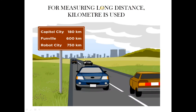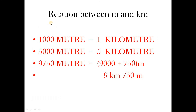For measuring long distances, we use kilometers — it is a long distance from one place to another. In this chart you see: capital city is 180 kilometers, one place is 600 kilometers, another city is 750 kilometers. Relation between meter and kilometer: 1000 meters = 1 kilometer, 5000 meters = 5 kilometers. If it is 9,750 meters, we write 9,000 + 750 meters — 9,000 meters means 9 kilometers and we write 750 meters separately.